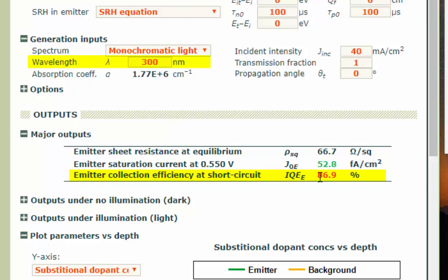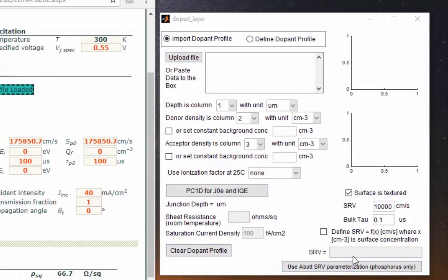On this last number, if we go to generation inputs, we can see that the IQE has been defined at a wavelength of 300 nanometer. Which means 86.9% of 300 nanometer light which has been absorbed in the emitter can be collected.